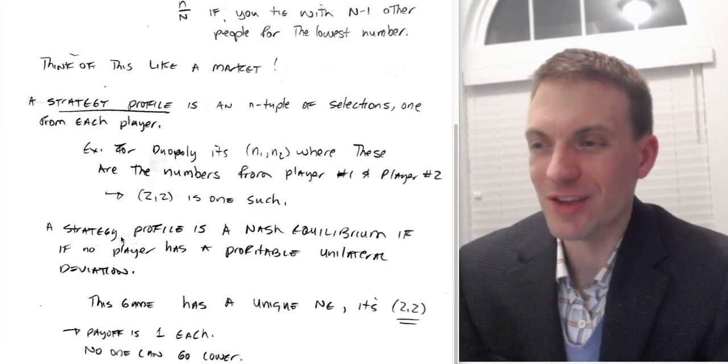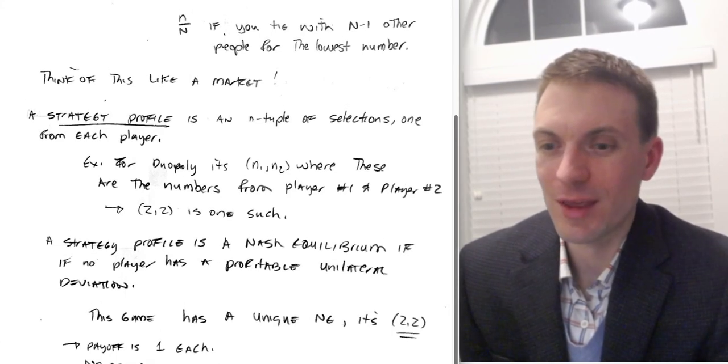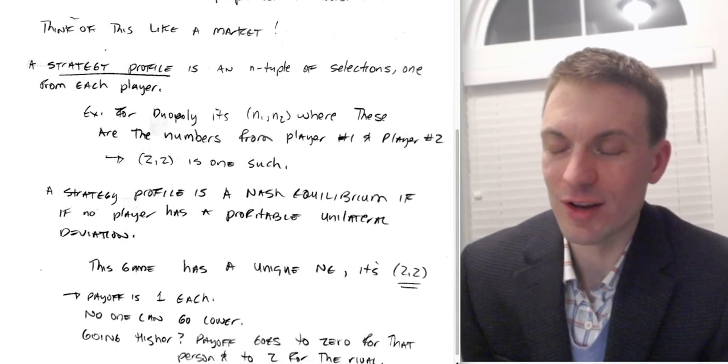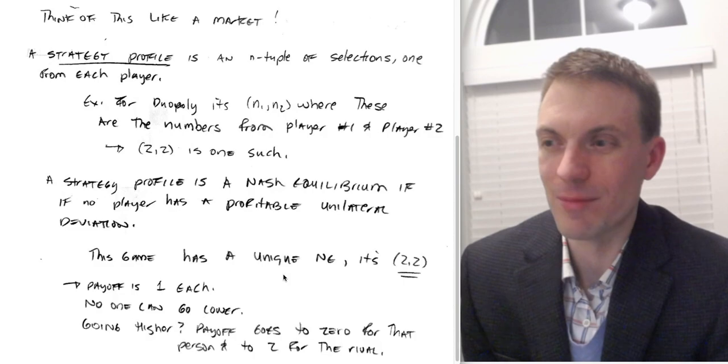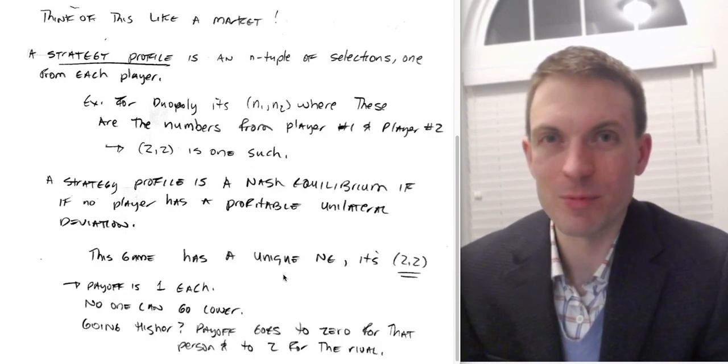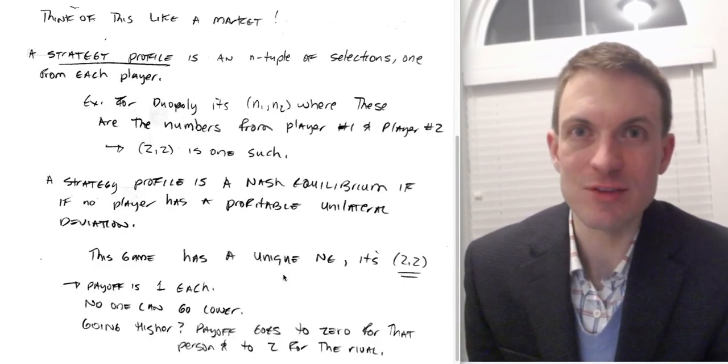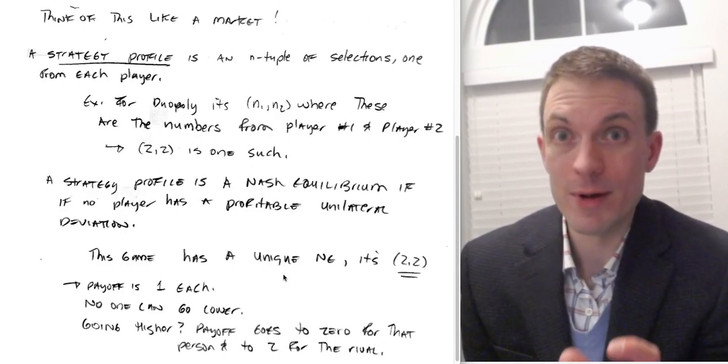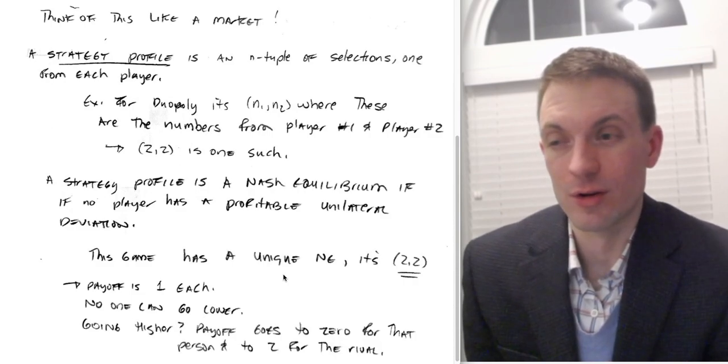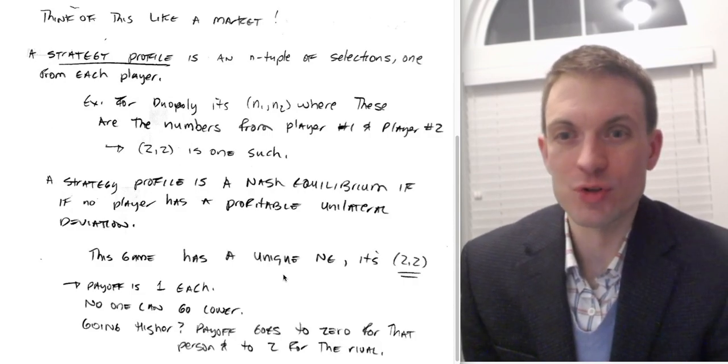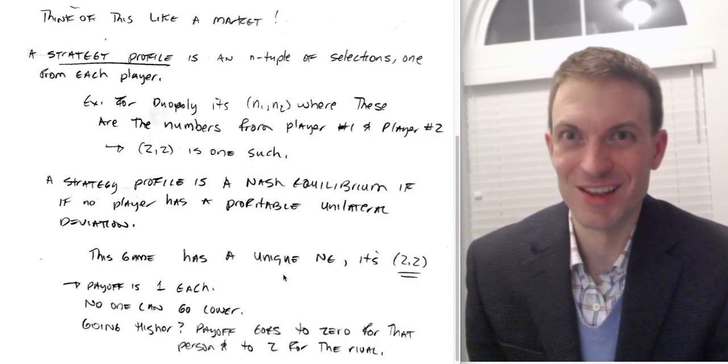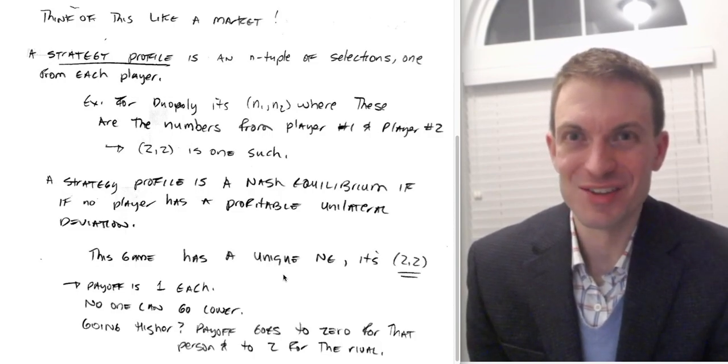Then we'd say a strategy profile is a Nash equilibrium if no player has a profitable unilateral deviation. What that means is we have a Nash equilibrium if you give me a pair of numbers such that nobody individually wants to switch. And so suppose that pair of numbers is 10-10. Does somebody want to switch? Yes. They both want to switch, conditional on the rival not switching. So if you're at 10-10, you'd be tying. Your payoffs would be 5.